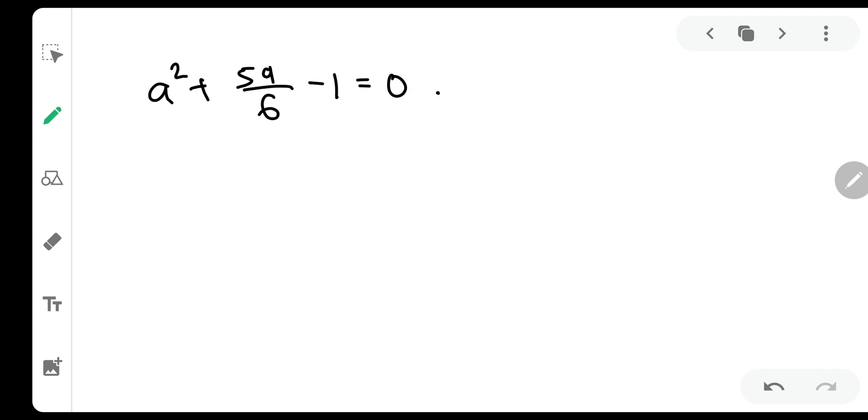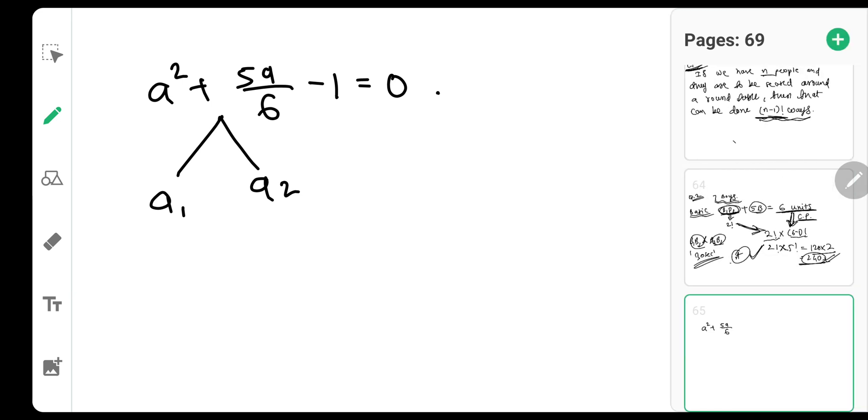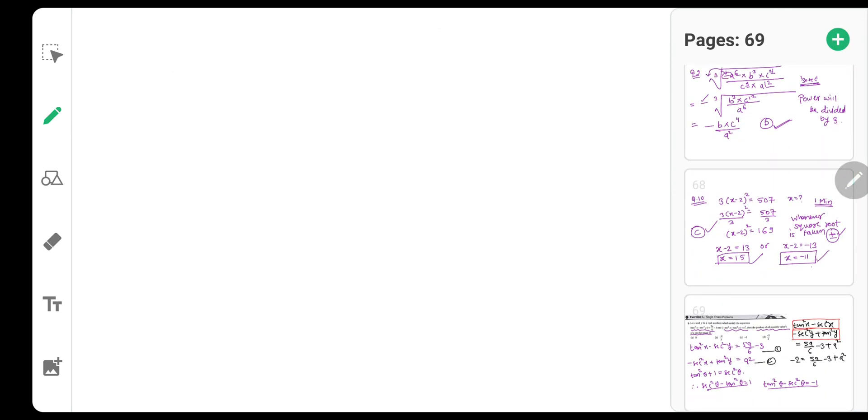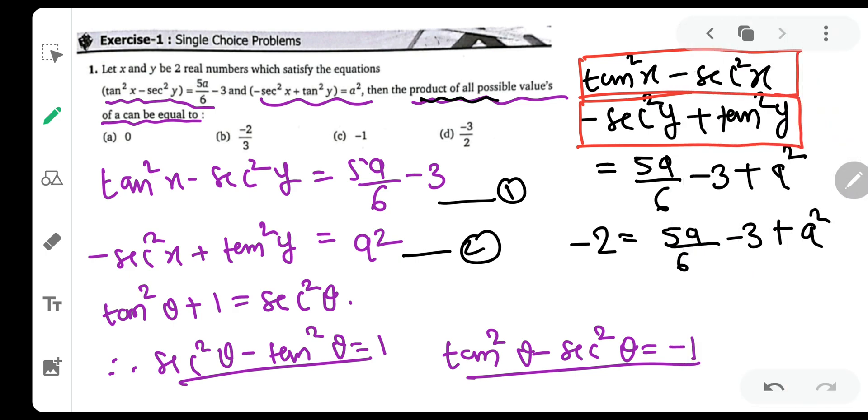Now this is very simple. This is a quadratic equation in a, so it will have two values a1 and a2. They have asked us the product of both the values. Let us check. They have asked us the product of all possible values of a.